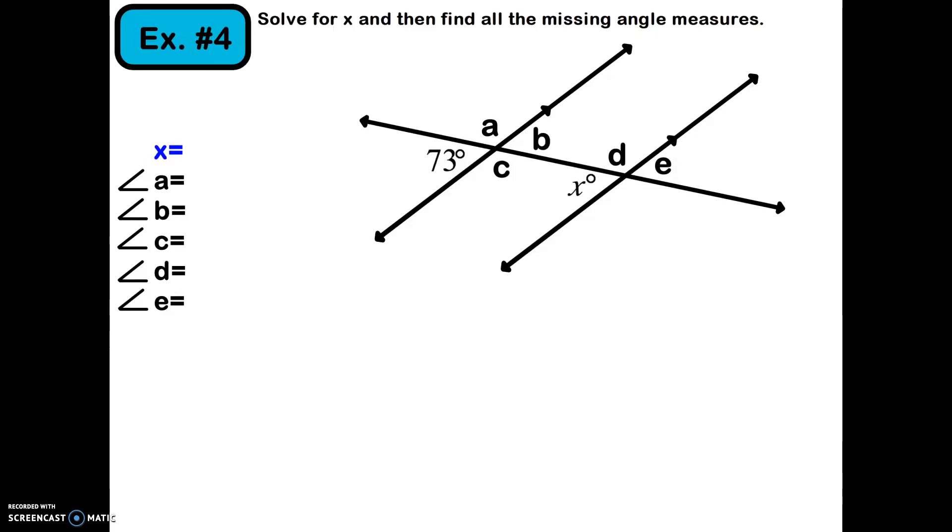By example four, you're probably figuring everything out. You drew your diagram already and you're starting to find angle relationships. We have parallel lines—you should be able to know that those two little arrows mean they're parallel. Our transversal is cutting through those parallel lines right there. I need to calculate what x is.